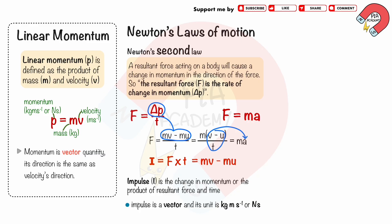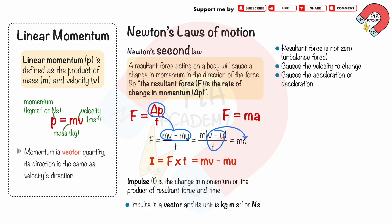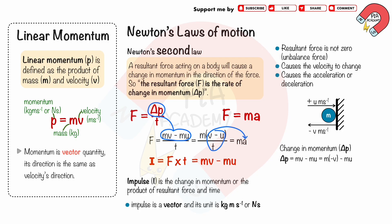We can conclude from Newton's second law of motion that if the resultant force is not zero, it causes the velocity to change, and the object will be accelerated or decelerated. If a ball of mass m kilograms hits a wall at speed u and bounces back with speed v, with collision time t as shown, we use a negative sign to represent the left direction. The change in momentum is mv minus mu; substituting negative v to indicate the left direction, the change in momentum is negative mv plus mu. The negative sign indicates that the change in momentum of the mass is to the left direction.